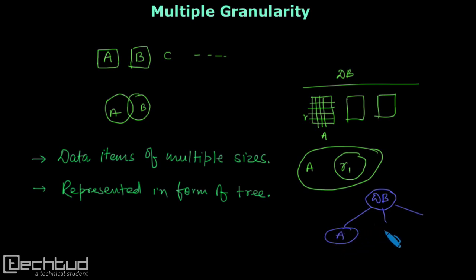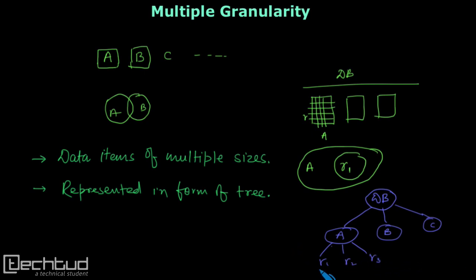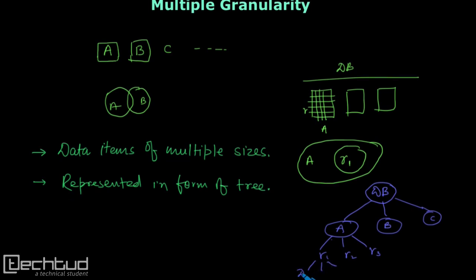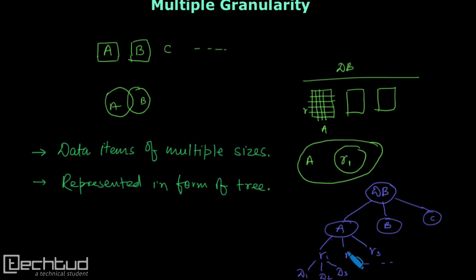The database will have multiple children which are tables — let's say a, b, c. Then each table will have multiple records — r1, r2, r3 and so on — and each record will have data items d1, d2, d3 and so on. In this case of multiple granularity we also get a tree, and in the previous lecture we also got a tree which was the database graph.